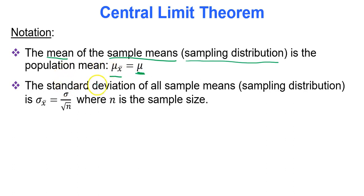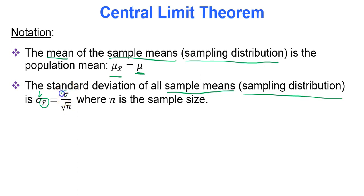The standard deviation of the sample means — the standard deviation of the sampling distribution — is not so obvious. The standard deviation sigma of the sample means (denoted with subscript x-bar) equals the standard deviation of the original data values distribution divided by the square root of the sample size. Make sure you make a note of this formula.